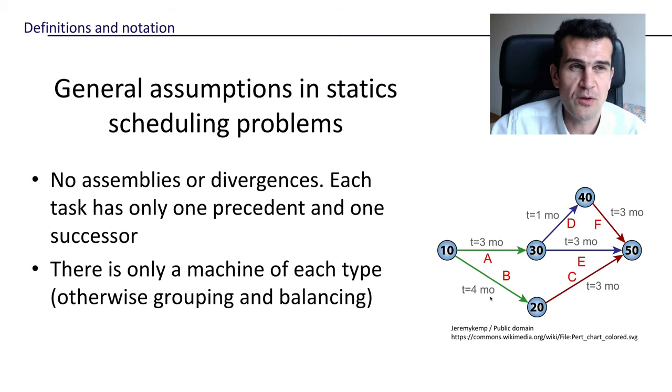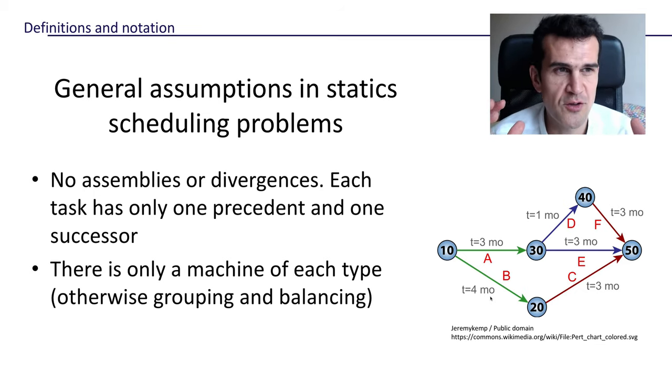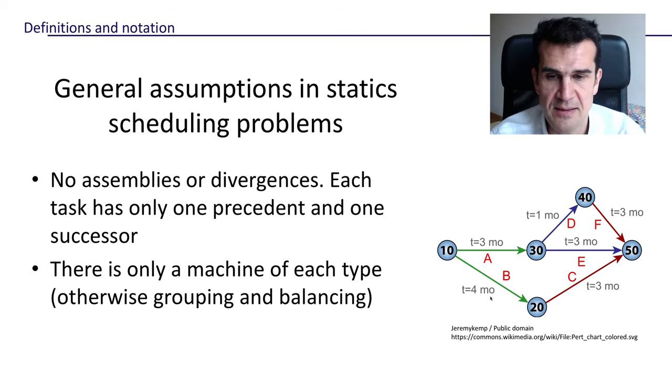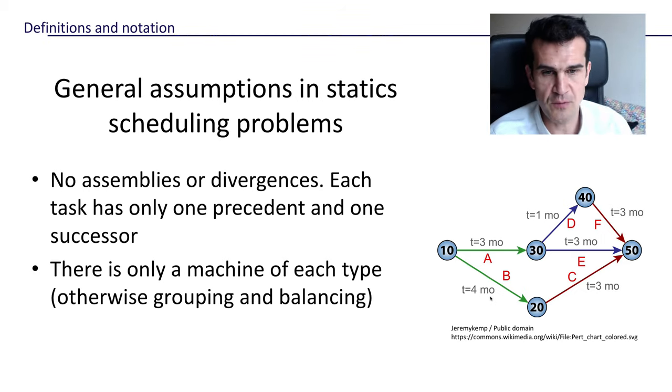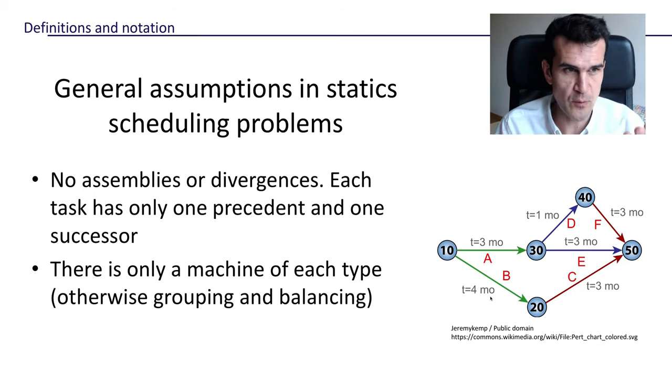And finally, we're going to assume that there is only one machine of each type. This may sound quite strict, but it's not as strict as it sounds. If we had several machines that can undertake the same task, what we would do is to group them, treat them as one, and then just balance the workload for each machine within each group.